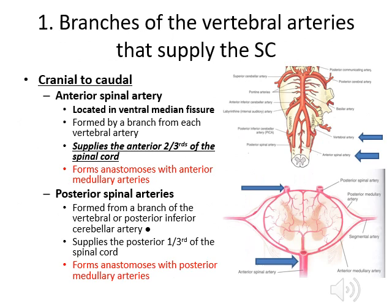The next few slides are on the blood supply of the spinal cord. Some of the key arteries: the anterior spinal artery, located in the ventral median fissure, supplies the anterior two-thirds of the spinal cord. The posterior spinal arteries supply the posterior third of the spinal cord.